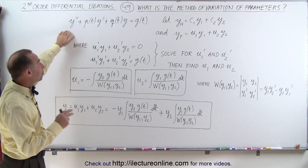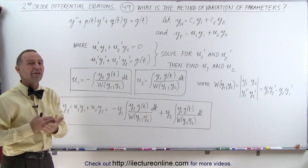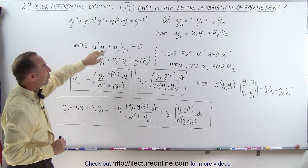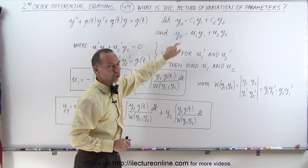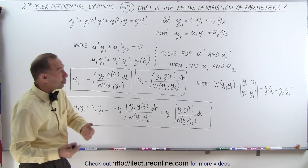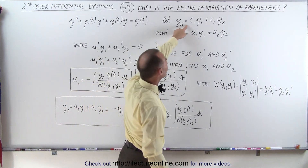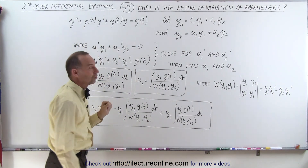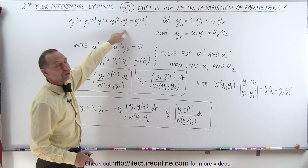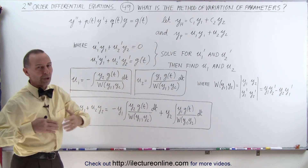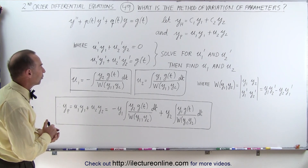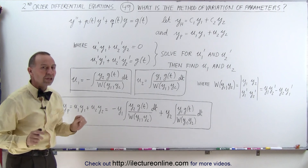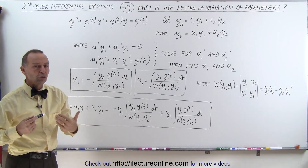To solve the homogeneous part we will need to use different methods. The method of variation of parameters specifically comes into play to solve for the particular solution. Later, we will show how to find the homogeneous solution for equations with non-constant coefficients. What we want to do here is explain what the method of variation of parameters is and what the solution looks like.